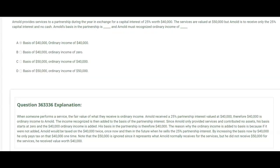Arnold provides services to a partnership during the year in exchange for a capital interest of 25% worth $40,000. His 25% of the partnership is worth $40,000. The services he's providing are valued at $50,000, but he's to receive only the 25% capital interest — no cash. Arnold's basis in the partnership is $40,000 and Arnold must recognize $40,000 of ordinary income, because when someone performs a service the fair value of what they receive is ordinary income. Notice that the services are valued at $50,000, but that's not what Arnold received — $40,000 is what was received for performing the services.